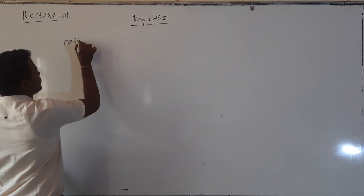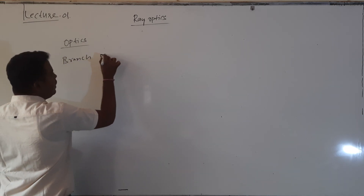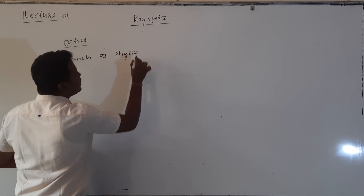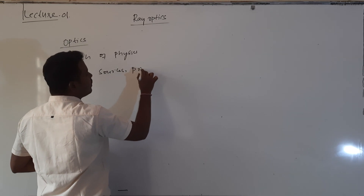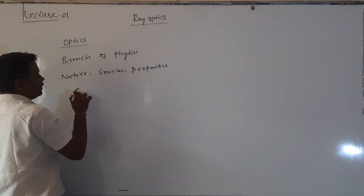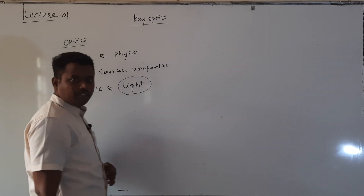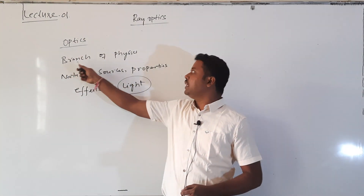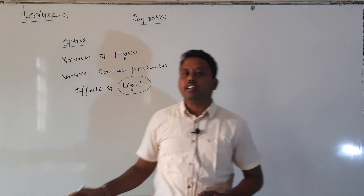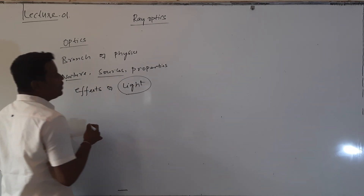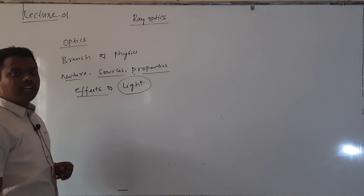First, let me discuss what optics is. Optics is the branch of physics which deals with the nature, sources, properties, and effects of light. Optics completely deals with light only. We will discuss: what is the nature of light, what are the types of sources of light, what are the properties exhibited by light, and what are the effects of light.